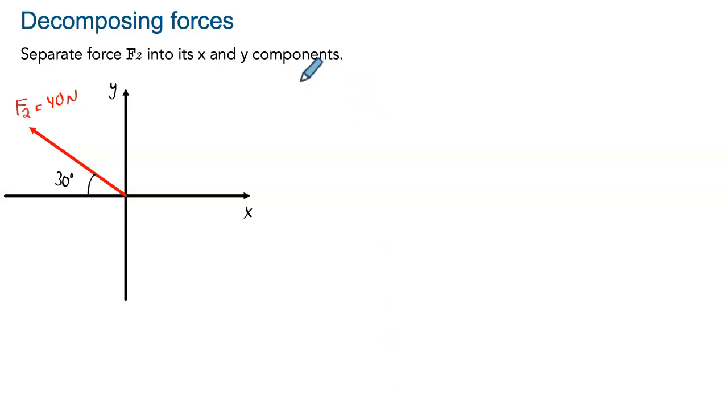So what we want to do is just to take this vector represented as 40 newtons at 30 degrees above the negative x-axis and transform it into the components of the vector F2. So we want to find what are F2x and F2y. In order to do this, I think the best way is to first draw a small box around your vector.